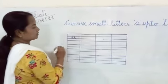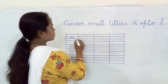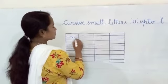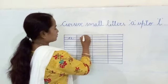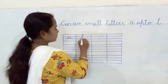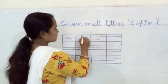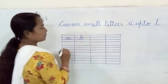A. This is small A — cursive small A. After A, what is the letter? B.